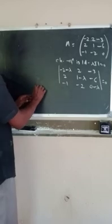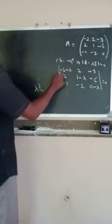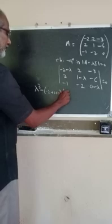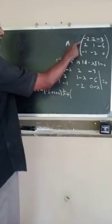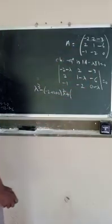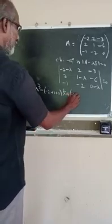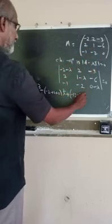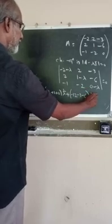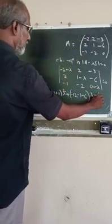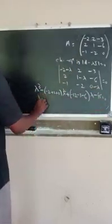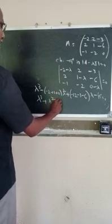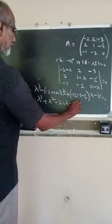That is, we can write lambda cubed minus (sum of the main diagonal elements), that is minus 2 plus 1 plus 0, into lambda squared, plus (sum of the minors of the main diagonal elements). The minor of element minus 2 is minus 12; minor of element 1 is minus 3; minor of element 0 is minus 6, into lambda, minus determinant of A which is 45, equal to 0.